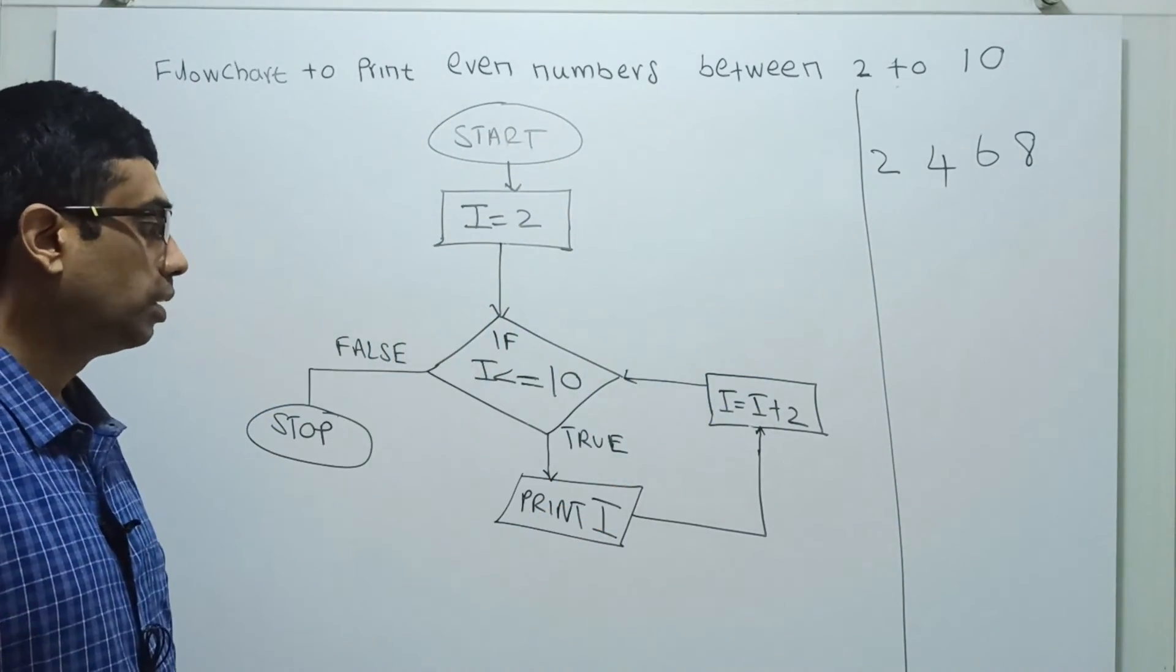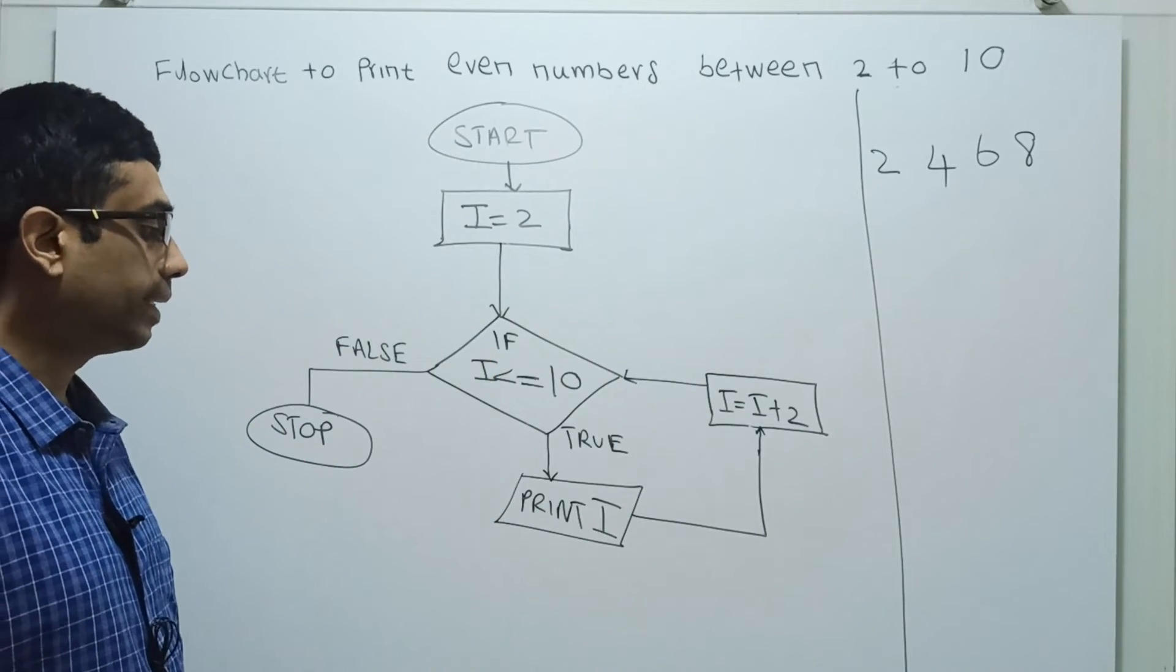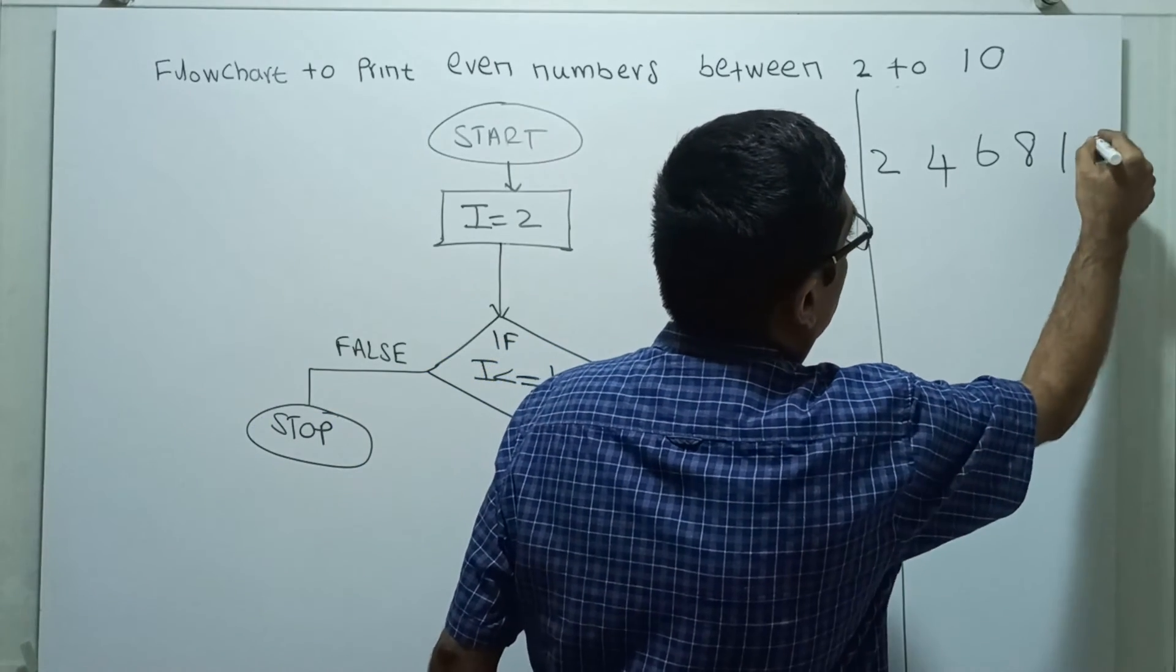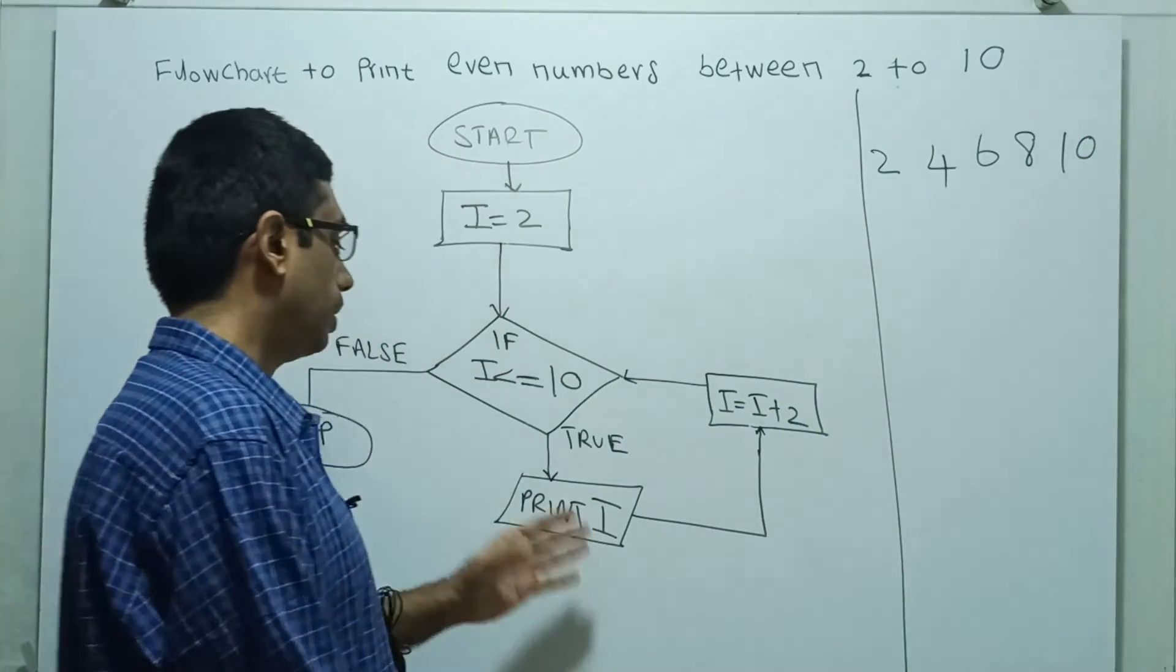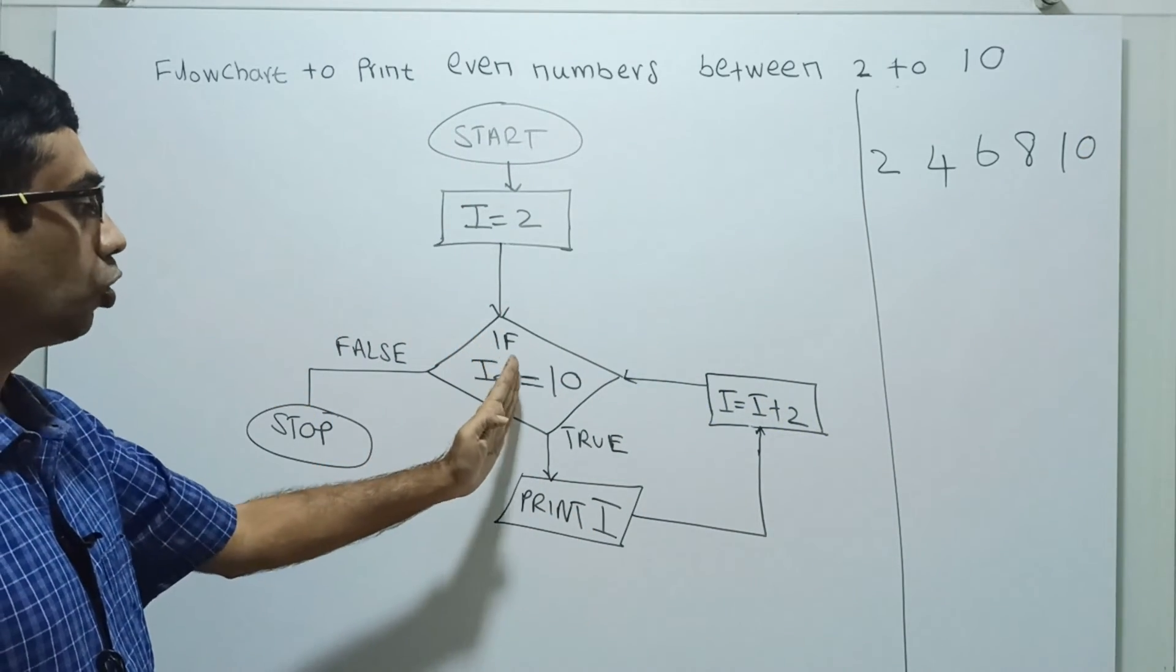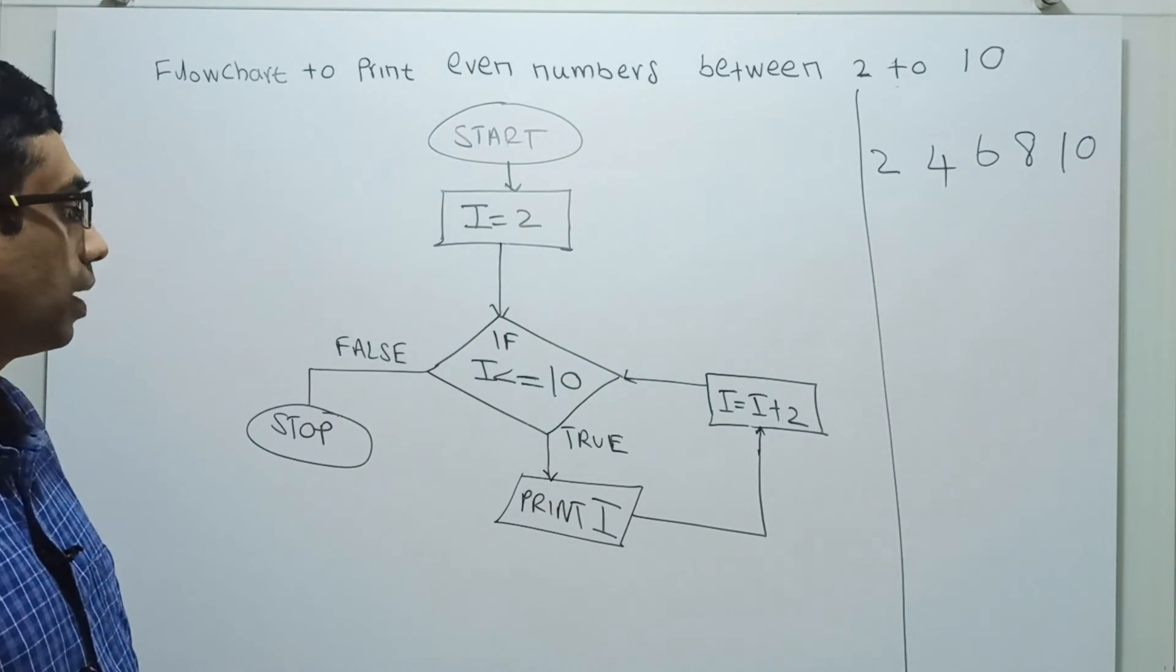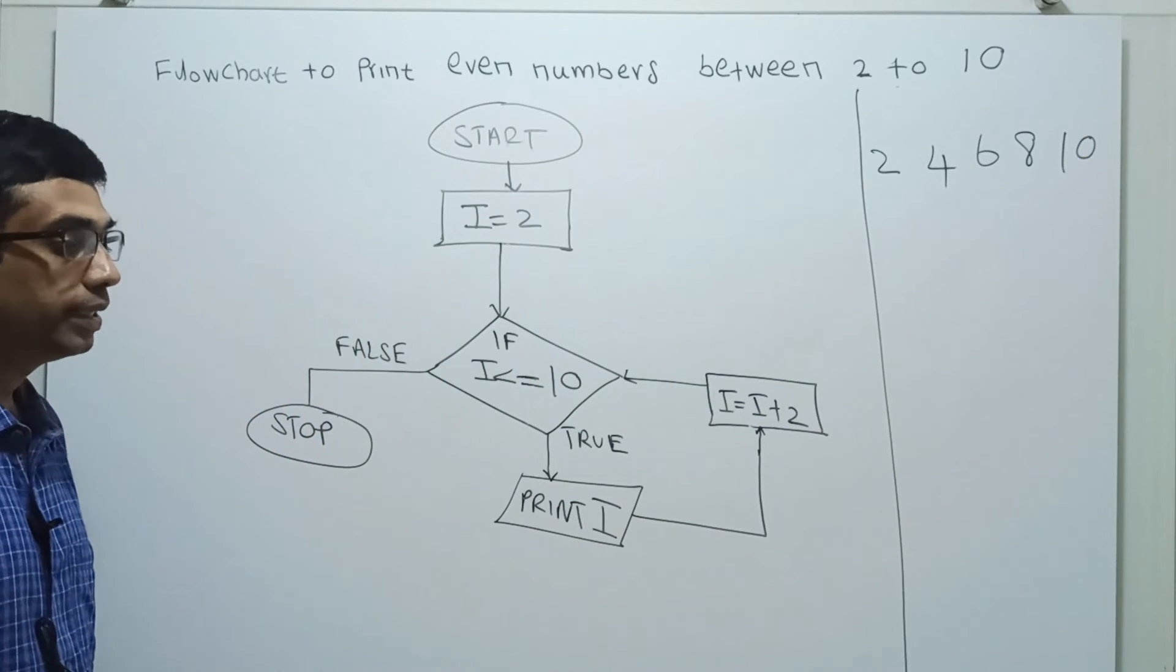i equal to i plus 2, i equal to 10. 10 less than or equal to 10, so 10 also gets printed. i equal to i plus 2, 12. 12 less than or equal to 10 is false. Then we come to the end of the flowchart.